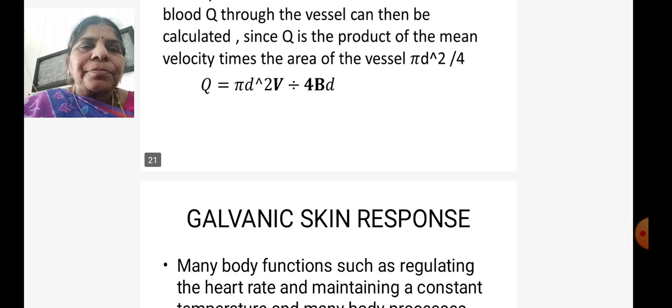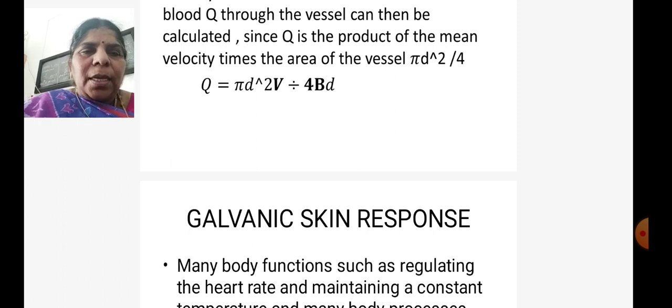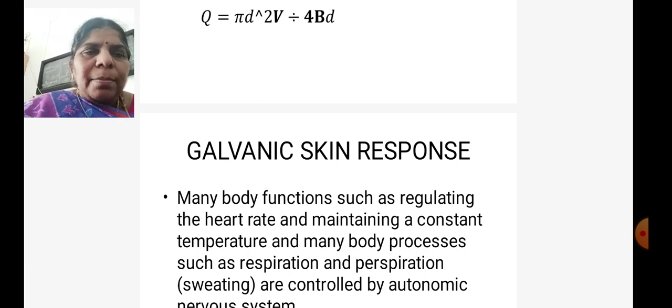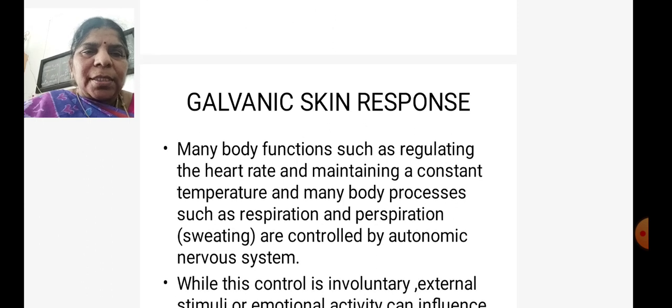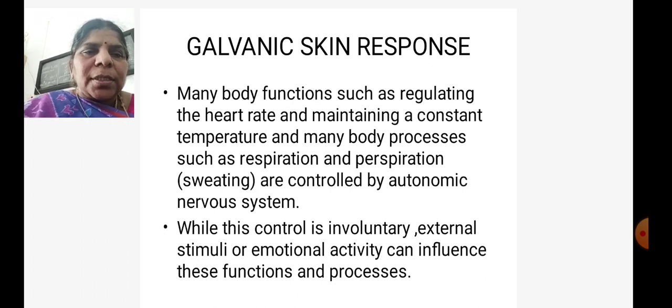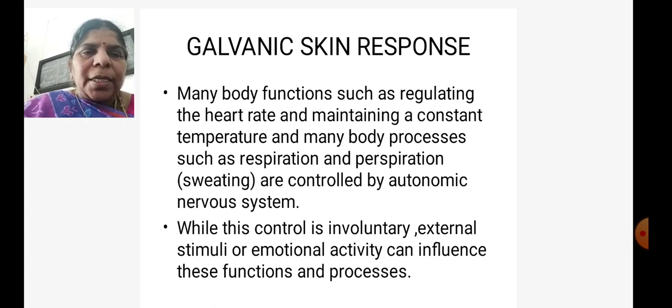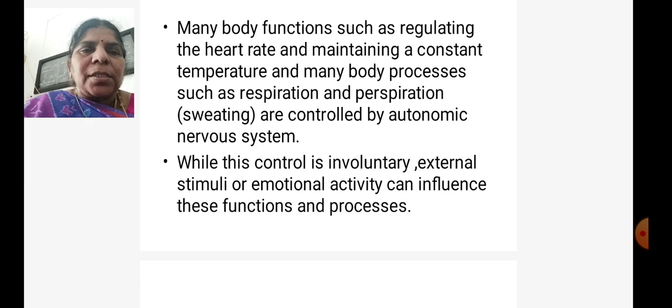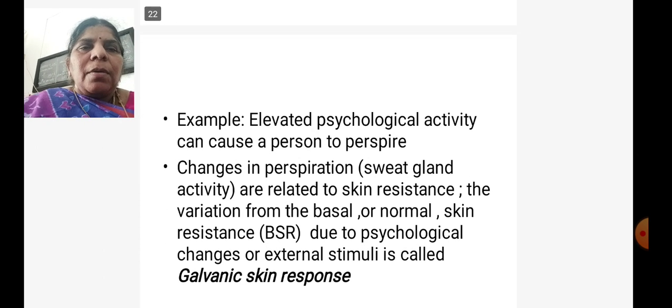Next, we are going to see the galvanic skin response, where you can calculate your body resistance. Many body functions such as regulating the heart rate and maintaining a constant temperature, and many body processes such as respiration and perspiration, are controlled by the autonomic nervous system. You cannot control it. While this control is involuntary, external stimuli or emotional activity can influence these functions and processes.